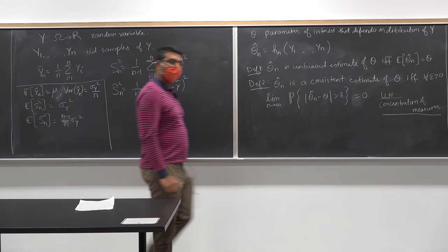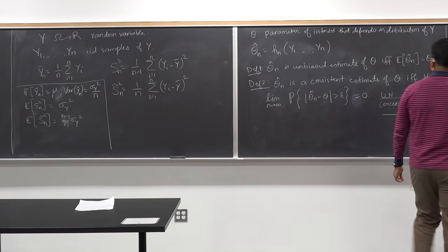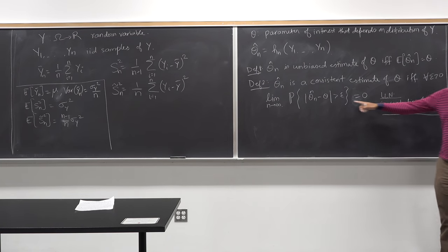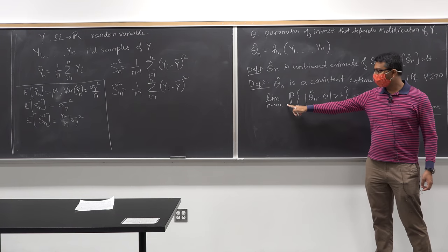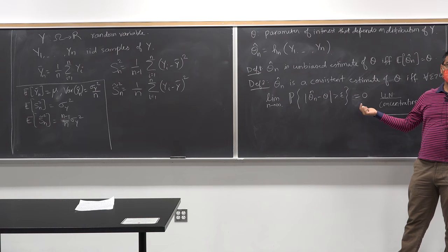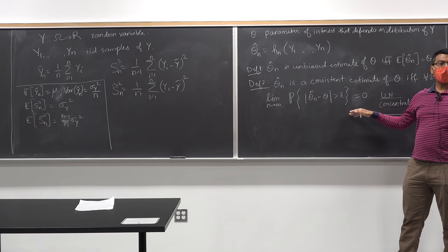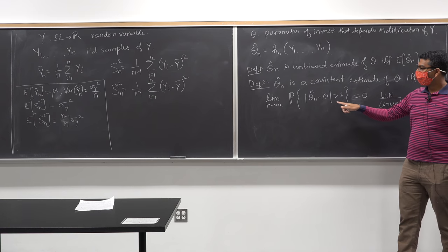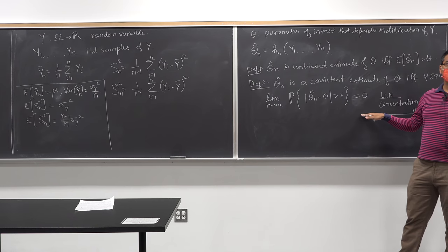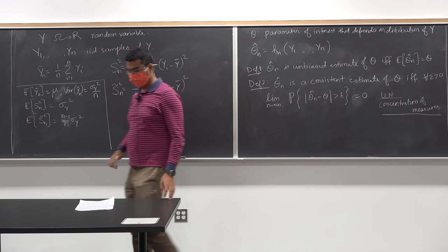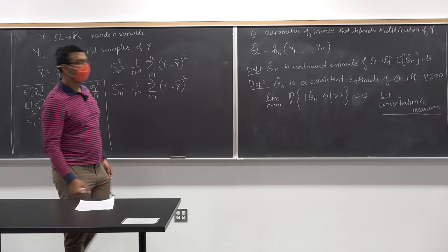Question: does epsilon have to be small? No — epsilon can be any positive number, large or small. What it affects is how quickly the probability converges to zero. If epsilon equals 1, the probability converges very fast to zero. If epsilon equals 0.00001, convergence will be extremely slow.